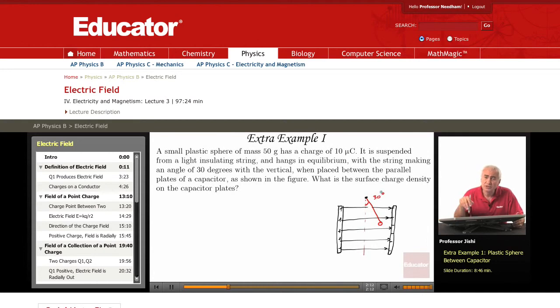To get the surface charge density, we know that the electric field is related to the surface charge density. If I have charge plus Q on this plate, minus Q on that plate, then sigma is just Q over A, the charge divided by the area of the plate. So each plate has area A, and the electric field is sigma over epsilon 0, so sigma is simply epsilon 0 times E.